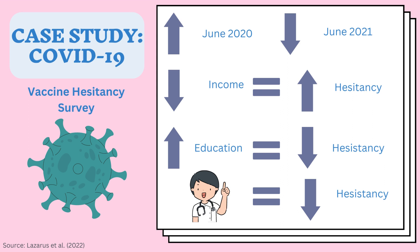Now let us end our discussion by examining a case study on vaccine hesitancy and herd immunity — the ongoing COVID-19 pandemic. A survey by Lazarus and colleagues collected data from 23 countries, and participants were asked a variety of questions on vaccine hesitancy. The survey reported that vaccine hesitancy was higher in June 2020, right when the vaccine was released, but one year later, in June 2021, vaccine hesitancy decreased. They also found that socioeconomic status played a large role, with vaccine hesitancy correlated with low income in most countries, and higher educational status seeming to cause less vaccine hesitancy. It was also observed that those recommended by their doctor were more likely to get vaccinated than those recommended by their employer, suggesting that if more doctors advocate to their patients personally, vaccine hesitancy can perhaps be decreased.